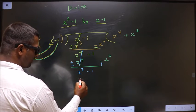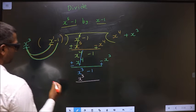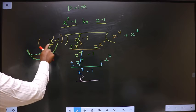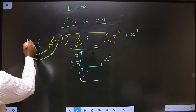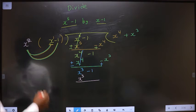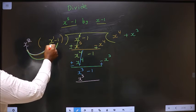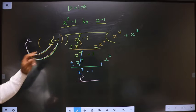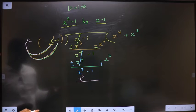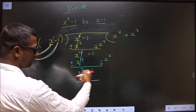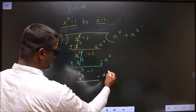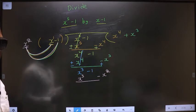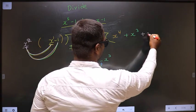Here it is x cube, so below this also you should get x cube. Here you have x power 1 — x power 1 should be multiplied with x power 2 to get x cube. When x power 2 is multiplied to this term, it should also be multiplied to the second term, minus 1. So x square into minus 1 is minus x square. Here I do not have minus x square, so I write it separately. This becomes your next term of the quotient: plus x square.